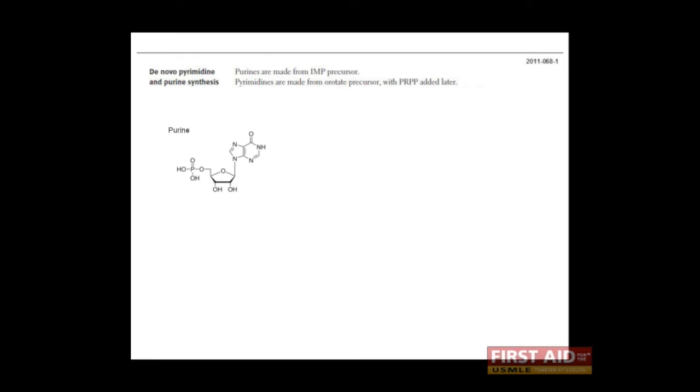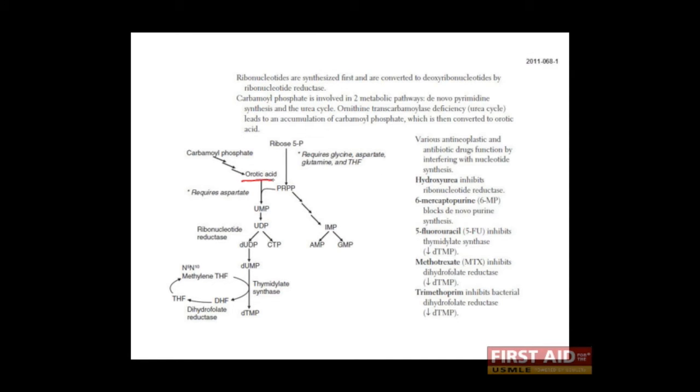So here's the purine precursor. It's called IMP, or inosine monophosphate. Pyrimidine, on the other hand, is created by combining orotic acid, or orotate, with PRPP, which is 5-phosphoribosyl-1-pyrophosphate. Okay, let's go ahead and take a look at the pathways. So here is orotic acid, or orotate. Here is PRPP. Here we have inosine monophosphate. And again, that's the precursor for adenine and guanine, which here is shown in its monophosphate form. Here we have the pyrimidines: uracil, here's cytosine, and here's thymine.